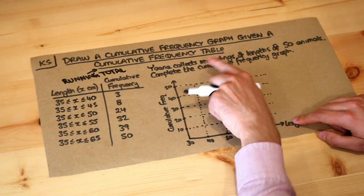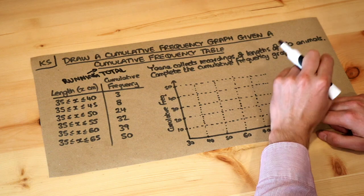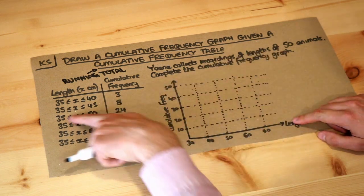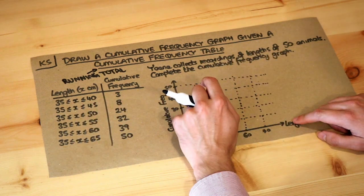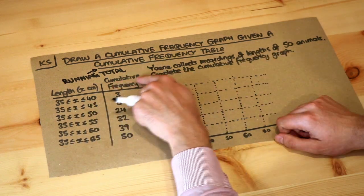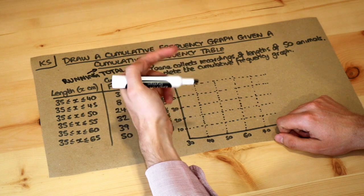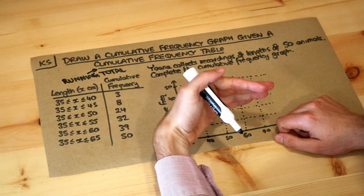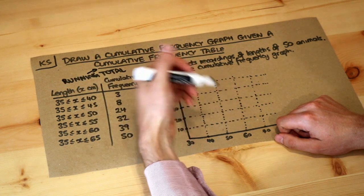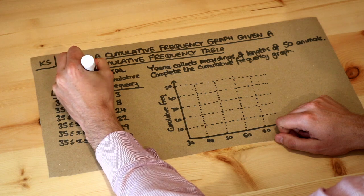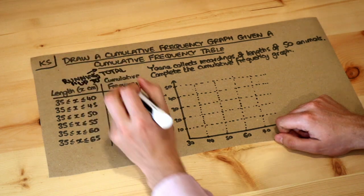We've got recordings of lengths of 50 animals, and cumulative means running total — it means the total number of things up to a particular value. So that's the key magic words: up to.